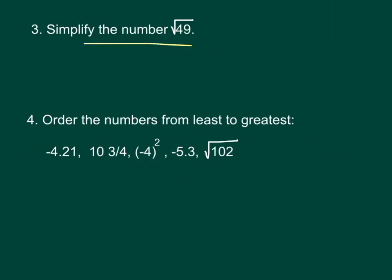Simplify the number the square root of 49. The answer to that is 7 because 7 squared is 49.